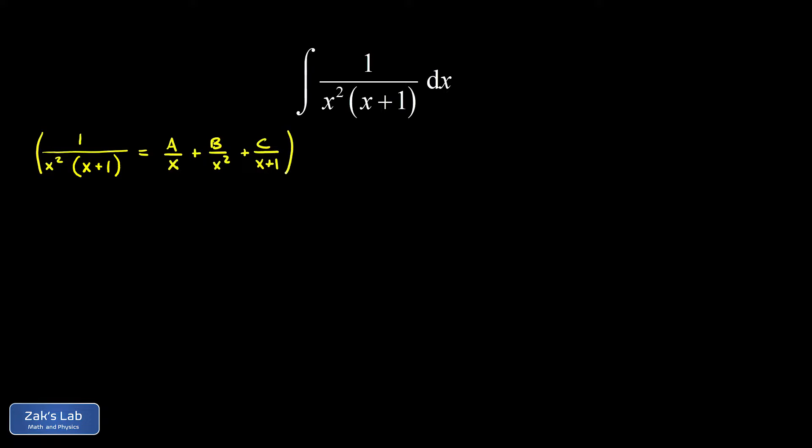Now we're going to clear our denominators as we start looking for these constants a, b, and c. We multiply by the least common denominator, that's x squared times x plus 1. When we distribute that to the left-hand side, we're left with just a 1.